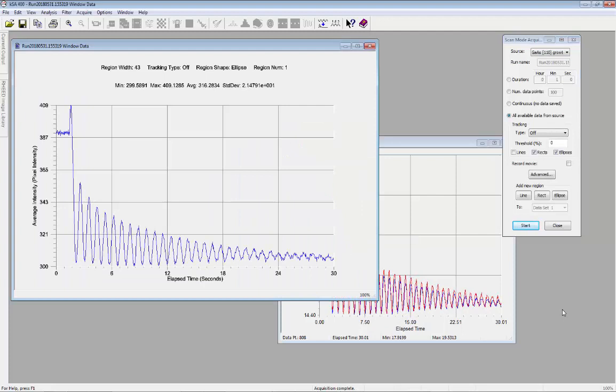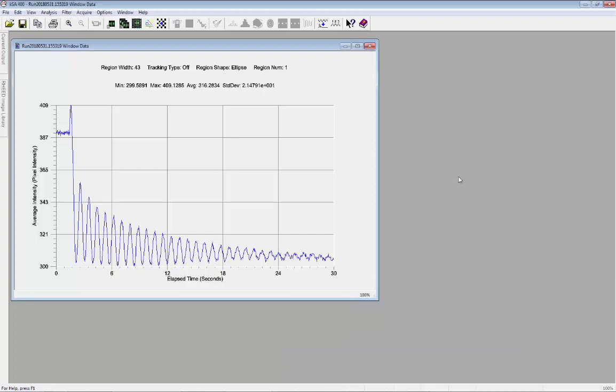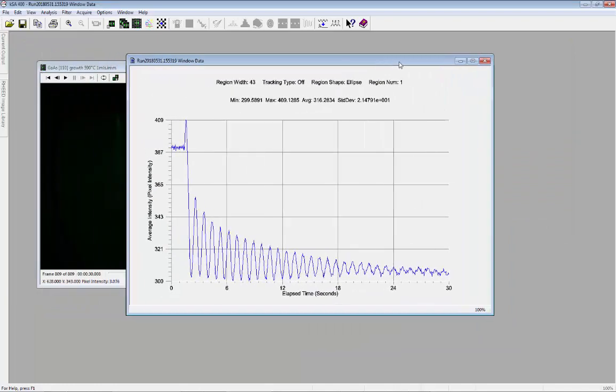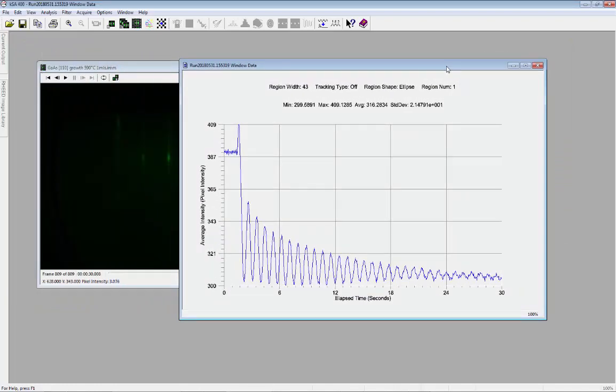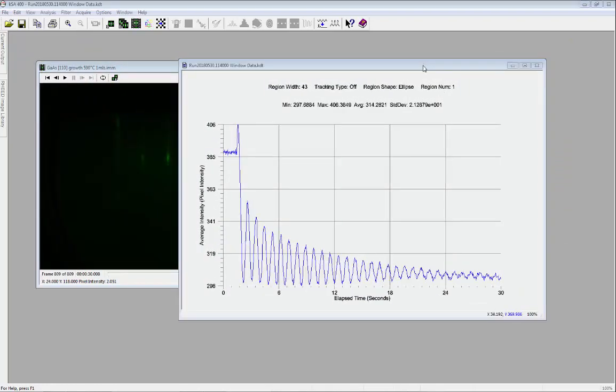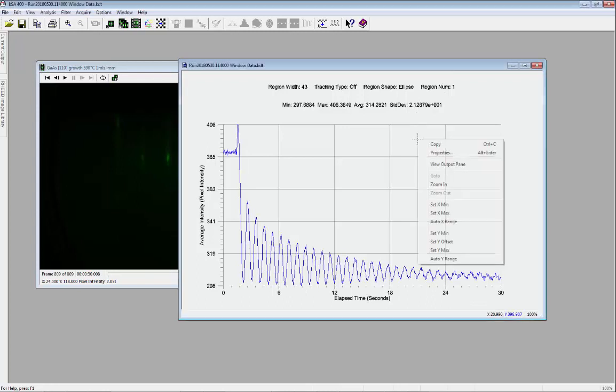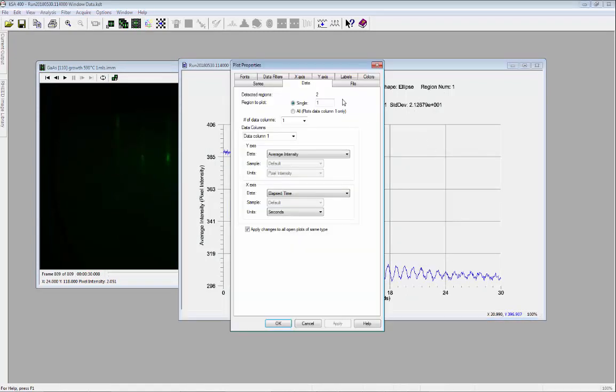When the acquisition is complete, the results will appear in a new window. I can close the Scan Mode acquisition and examine the results. Right-click, select Properties, and then select the Data tab to choose the value to plot.